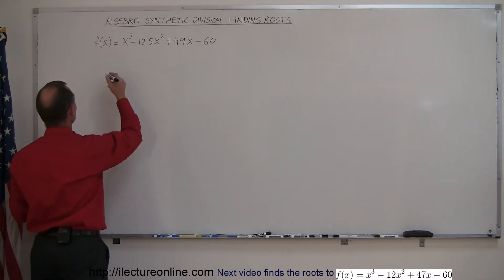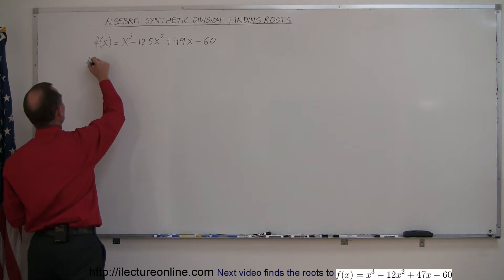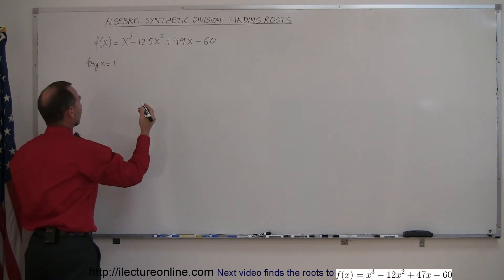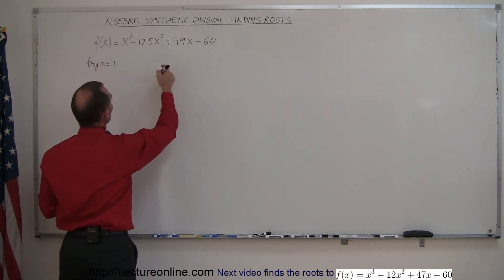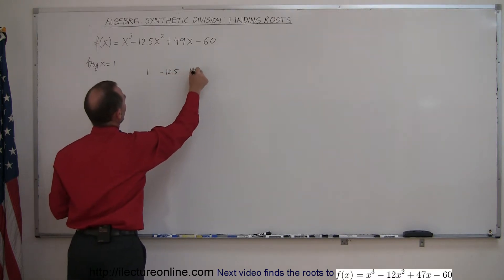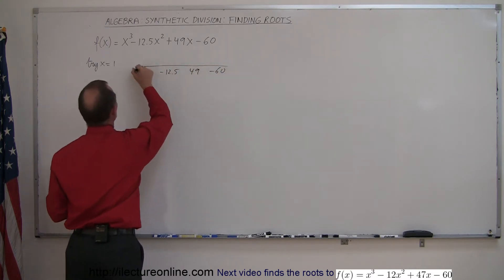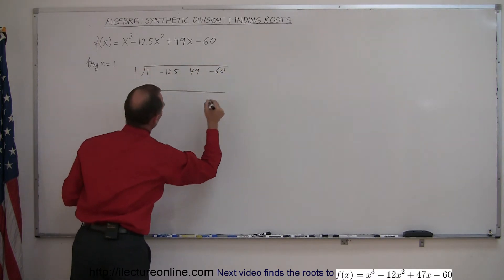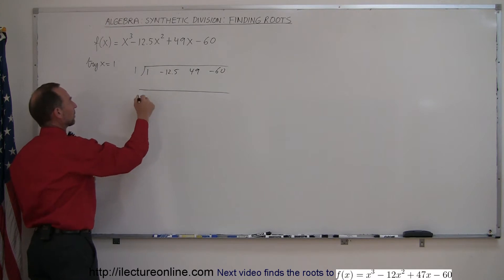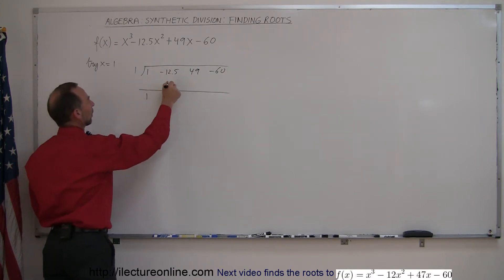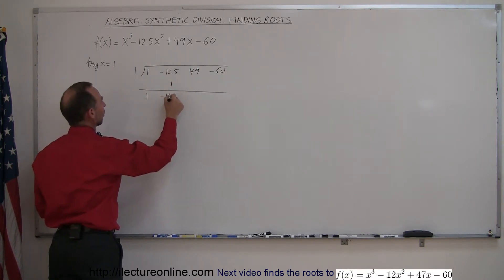First, we're going to try a root, so let's start with x equals 1 as a possible root. We put down the coefficients: 1, minus 12.5, 49, minus 60, our division symbol and our first possible root. Drop down the 1, 1 times 1 is 1, add it together you get minus 11.5.